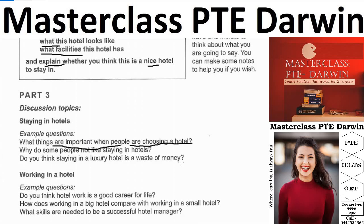What are the other things people need to consider when choosing a hotel? Students in the class participate: first thing is a convenient location near the sea beach or tourist spot, second is price and services.